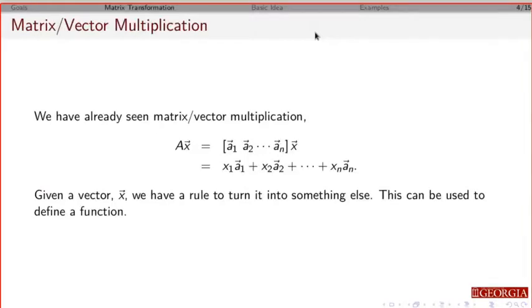All right. So we've seen matrix times a vector multiplication. So the idea is if you take a matrix times a vector, if you think about the matrix in terms of its columns, matrix times a vector just gives you a linear combination of the columns of that matrix. So here's the thing. If I just have A times x, that basically defines a rule to give you a new vector.